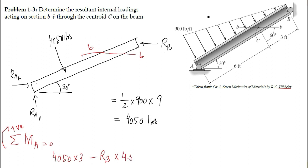This distance can be calculated using basic trigonometry. Solving this equation gives the value of R_B as 2700 pounds.